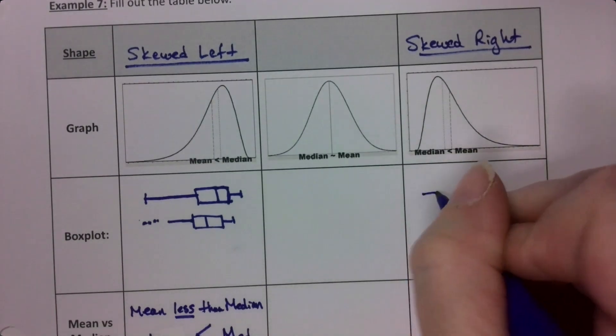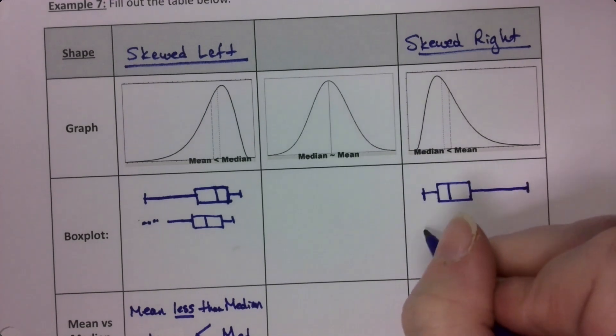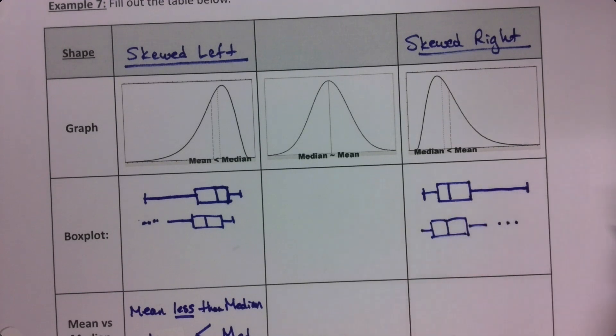So it's going to have kind of a bigger box on the right or a bigger whisker on the right. Or sometimes both.